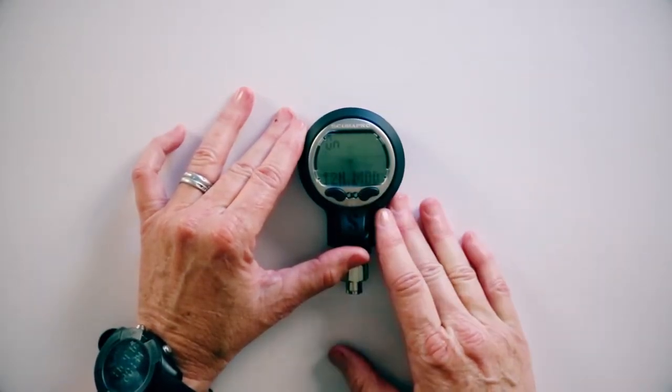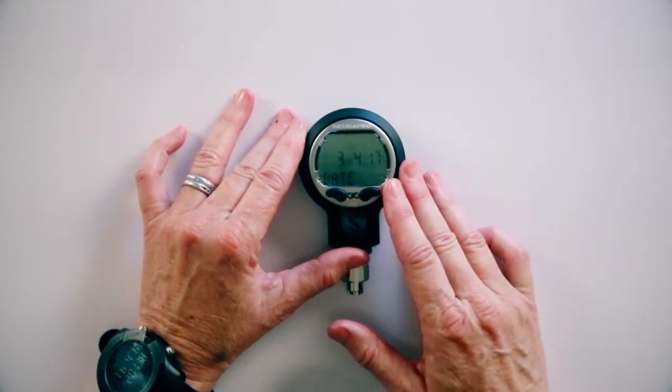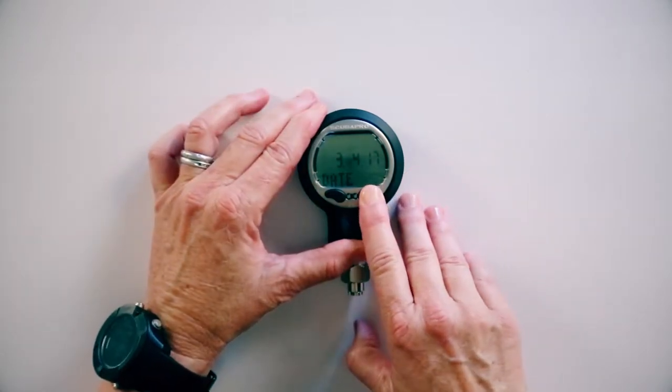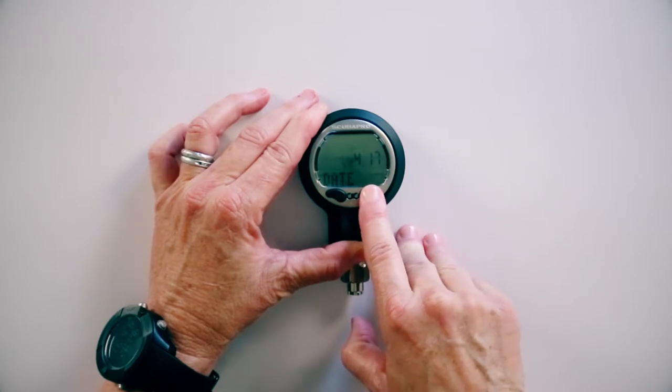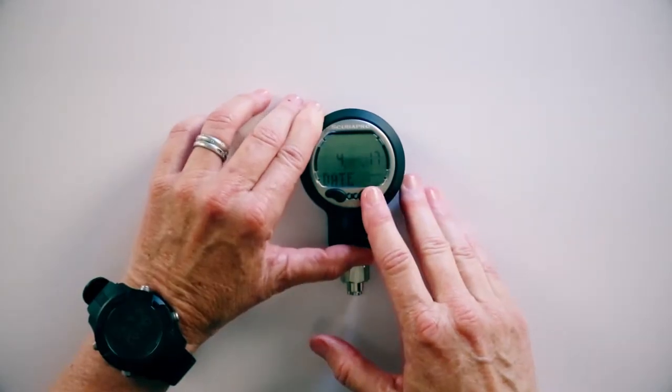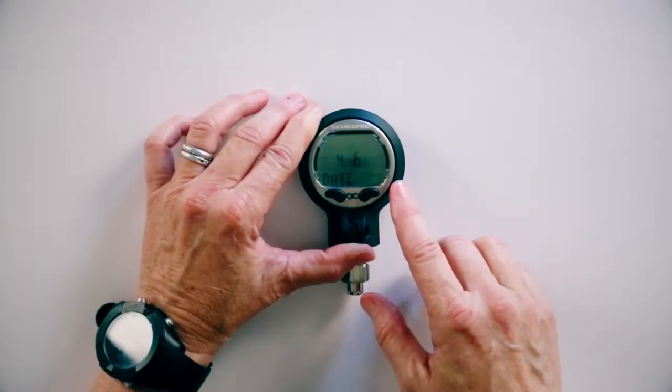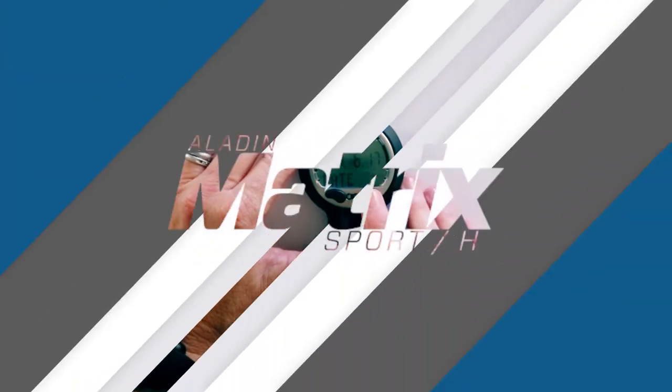We'll go forward, we'll pass this guy because we have it on 12 hour, and the date. Today's date is April 6th, so I'll push and hold this. The date will flash. I'll advance it to April, push and hold to set, and then the day is the 6th. Push and hold to set, and it's 2017, so we'll push and hold to set that, and we're done with that.